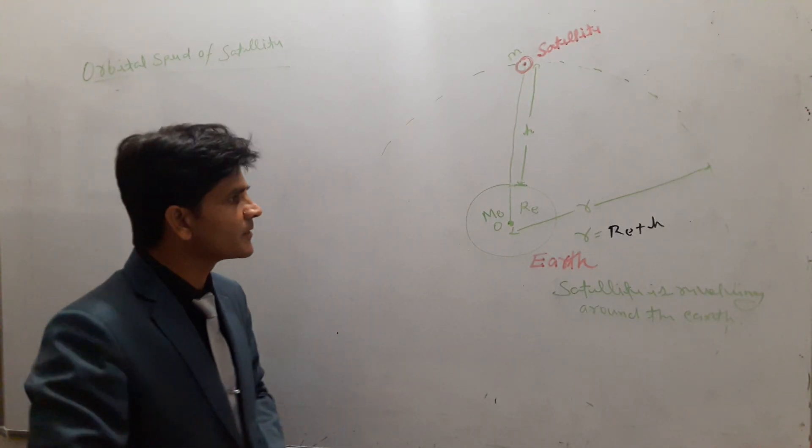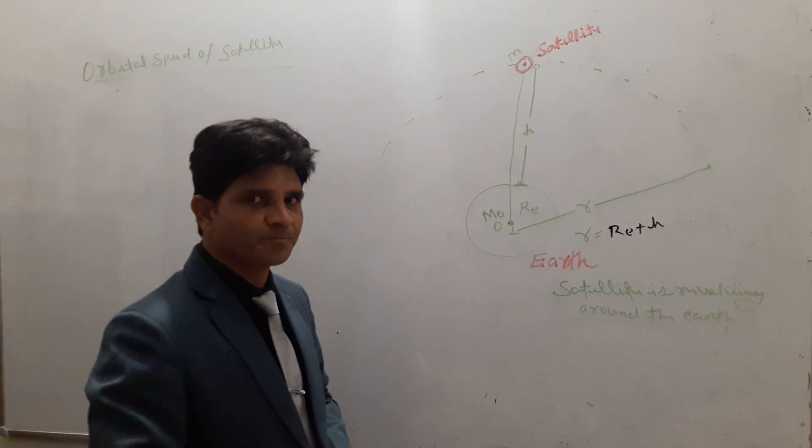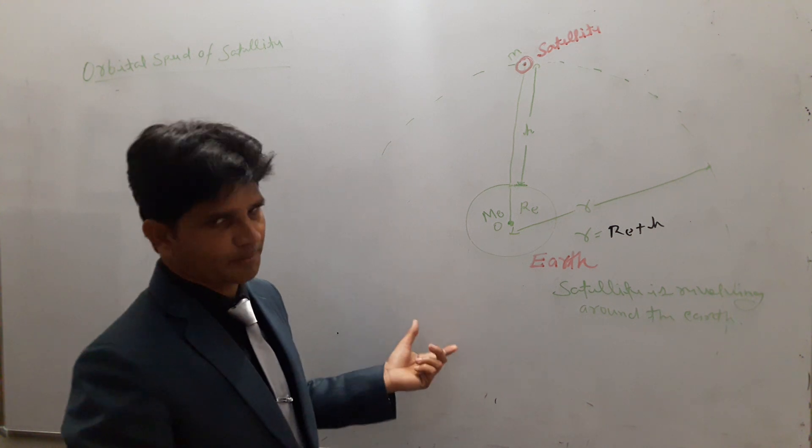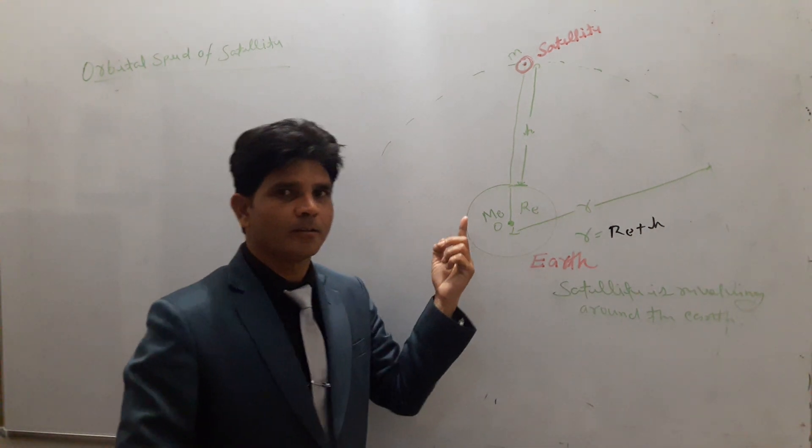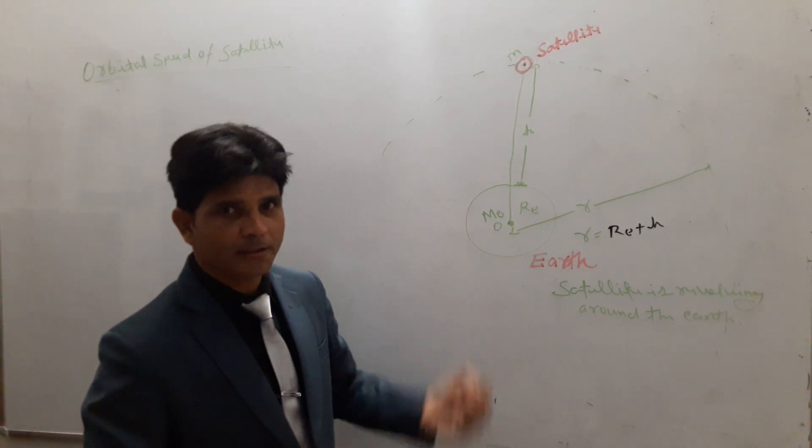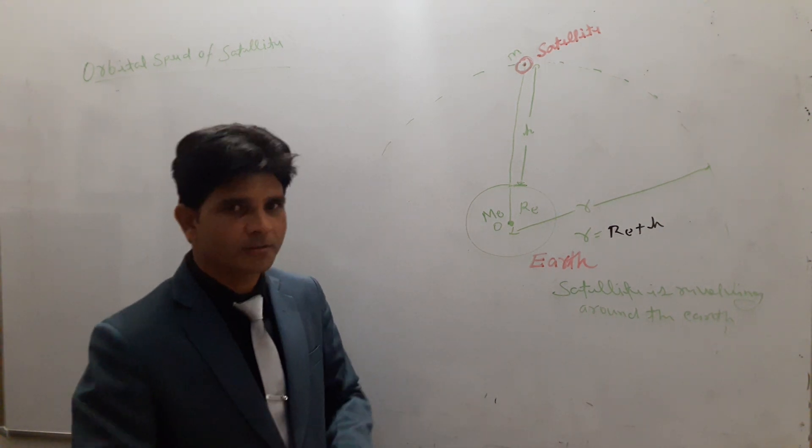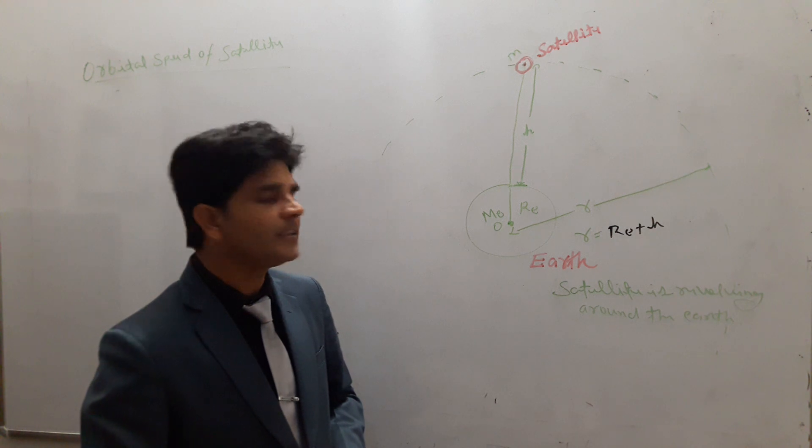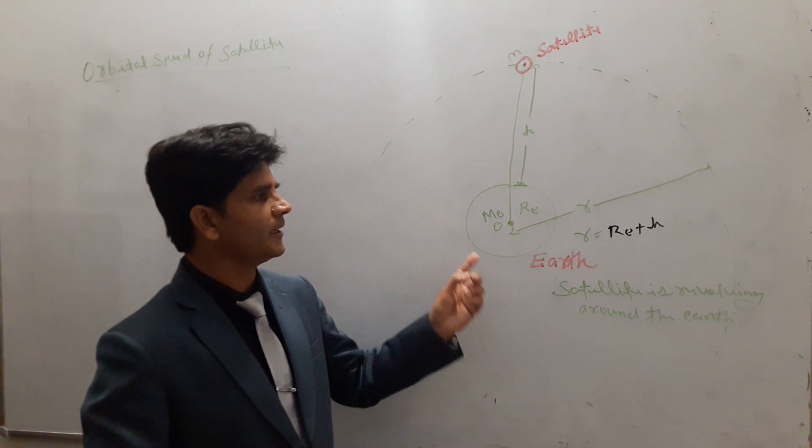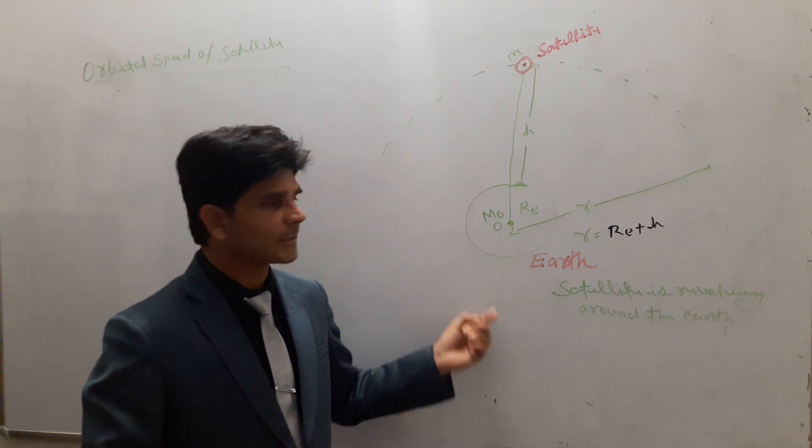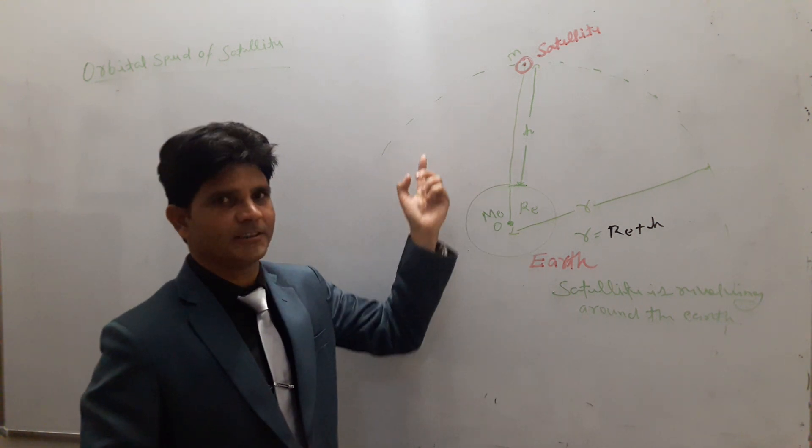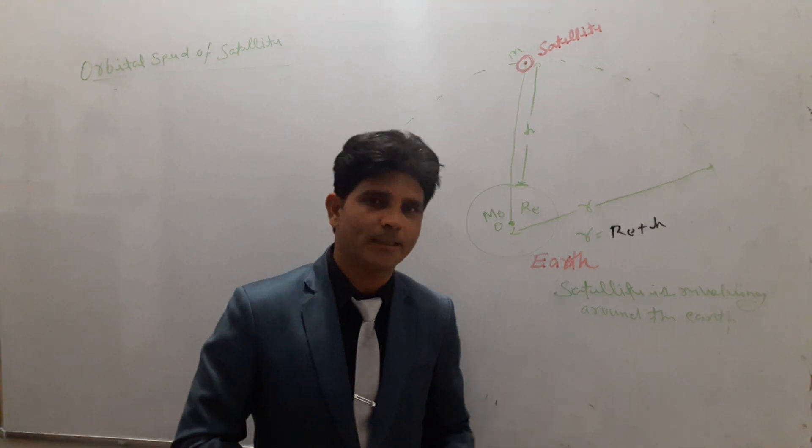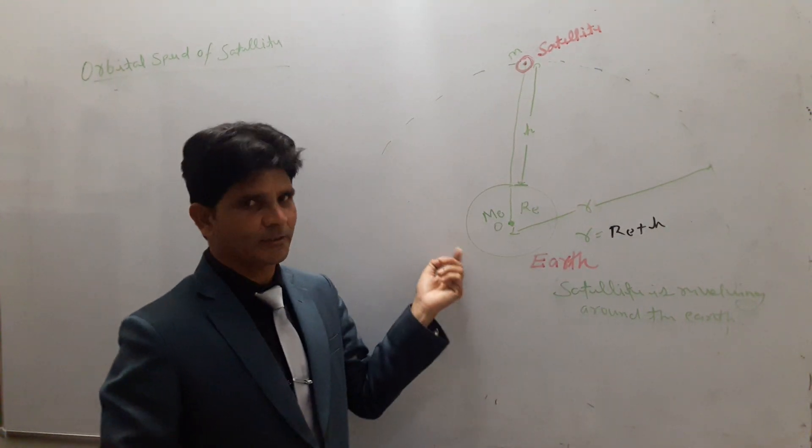So for deriving the relation or expression, we have to use a concept according to which every body moves on a circular path and requires a centripetal force, which is provided by the forces available there. Here, the available force is the gravitational force between the mass of Earth and the mass of satellite, which provides the necessary centripetal force to the satellite.